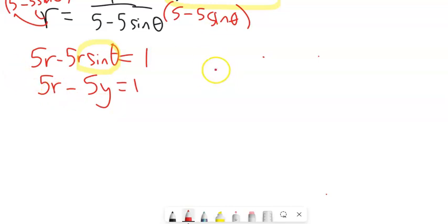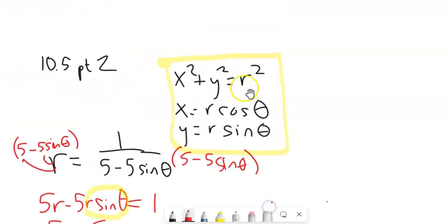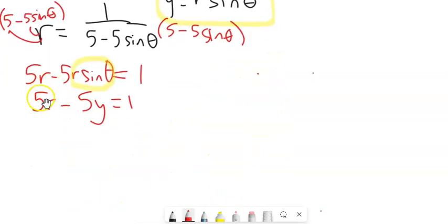I just have an r, but really, I want an r squared. So what I'm going to do is I'm going to get at least the 5r all alone and then square both sides. So I could add 5y to both sides.